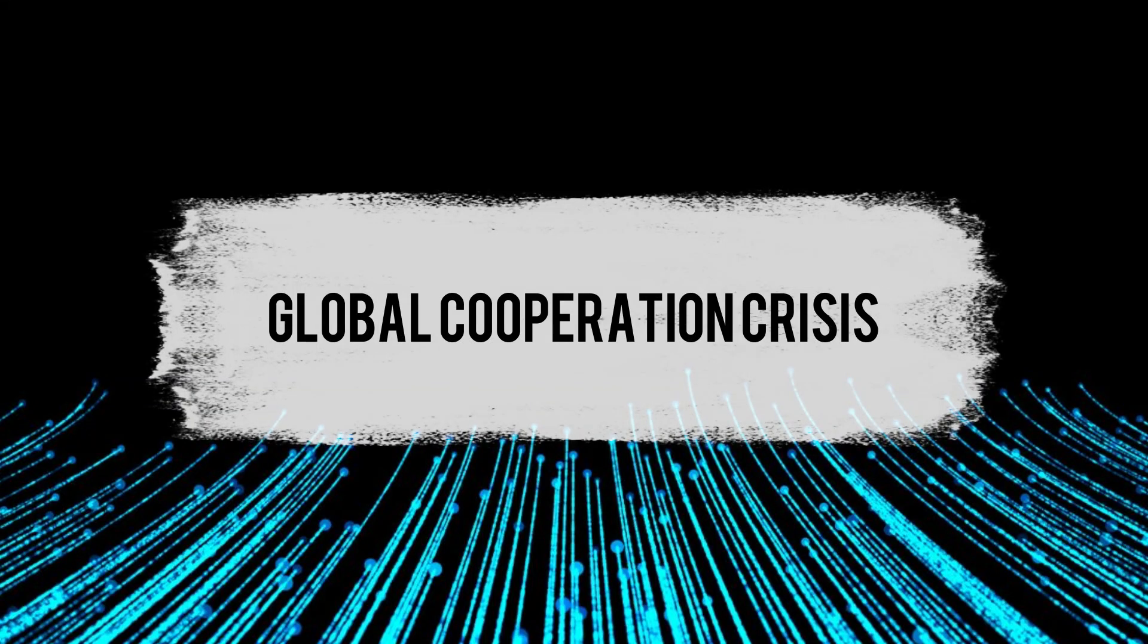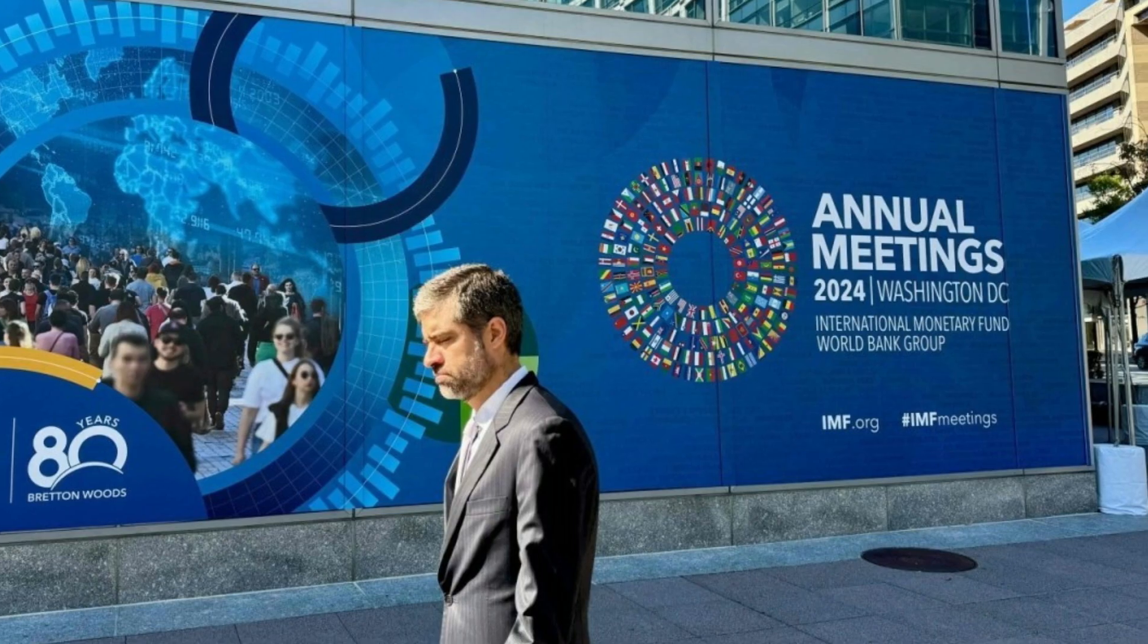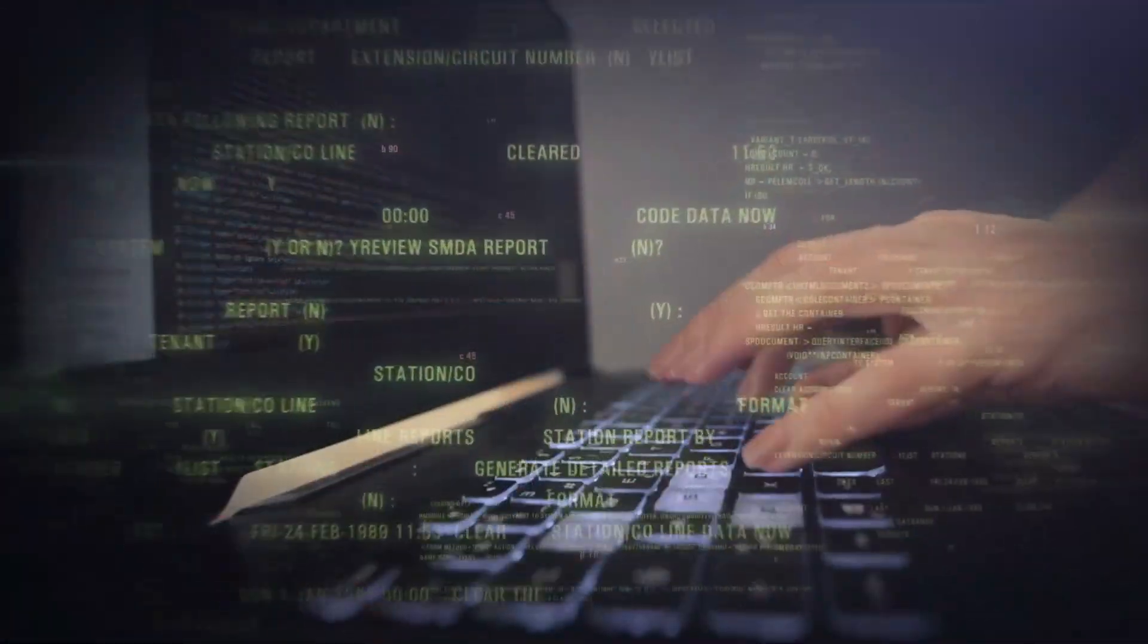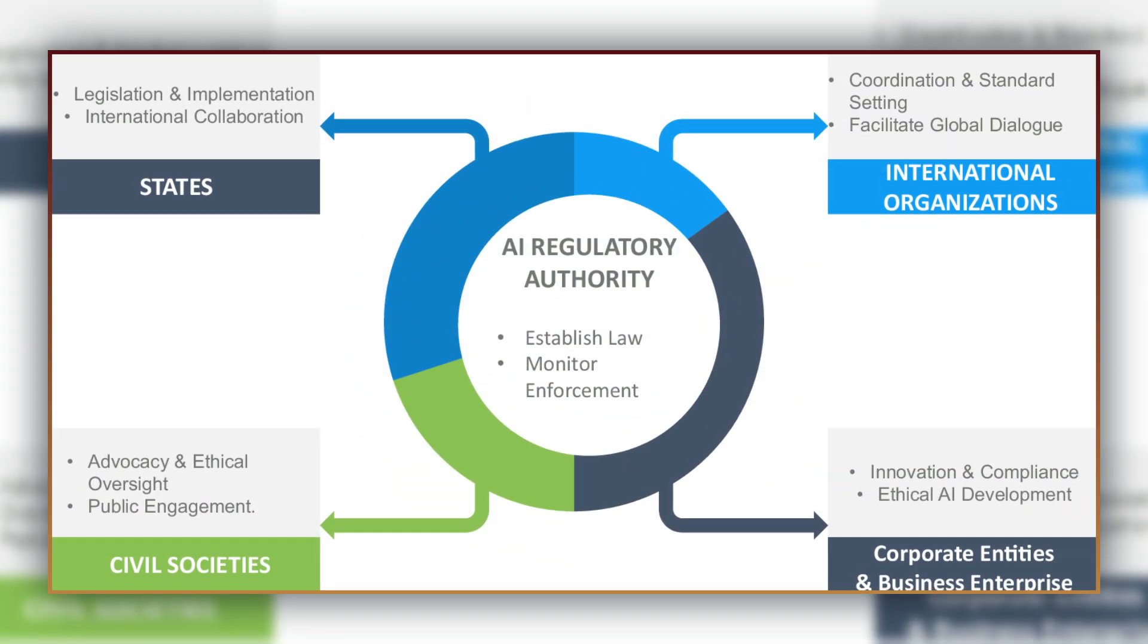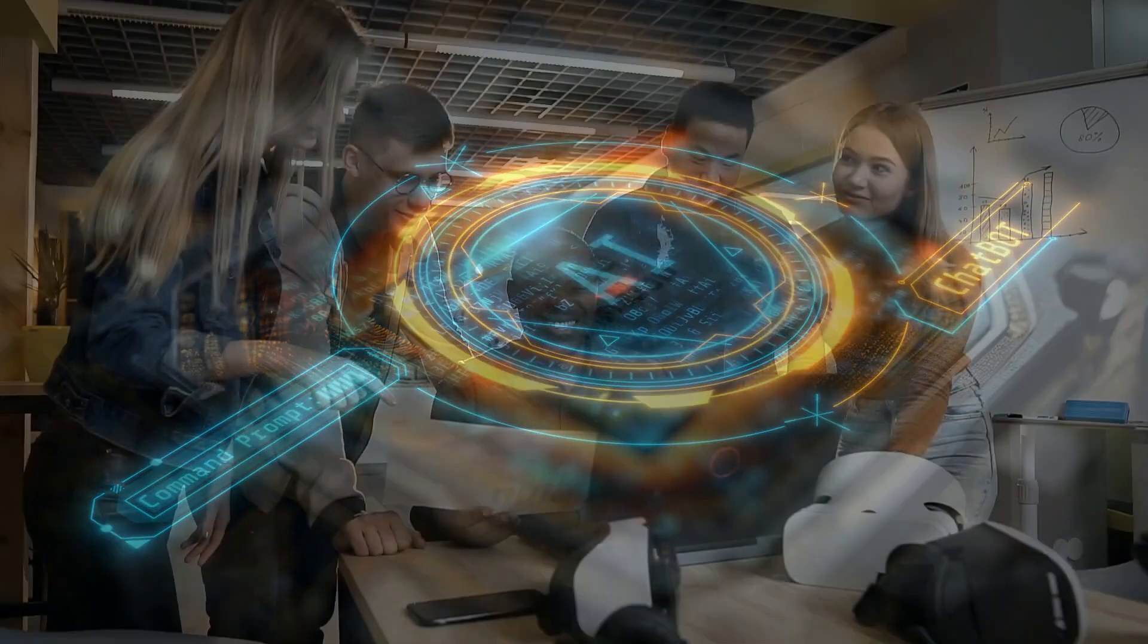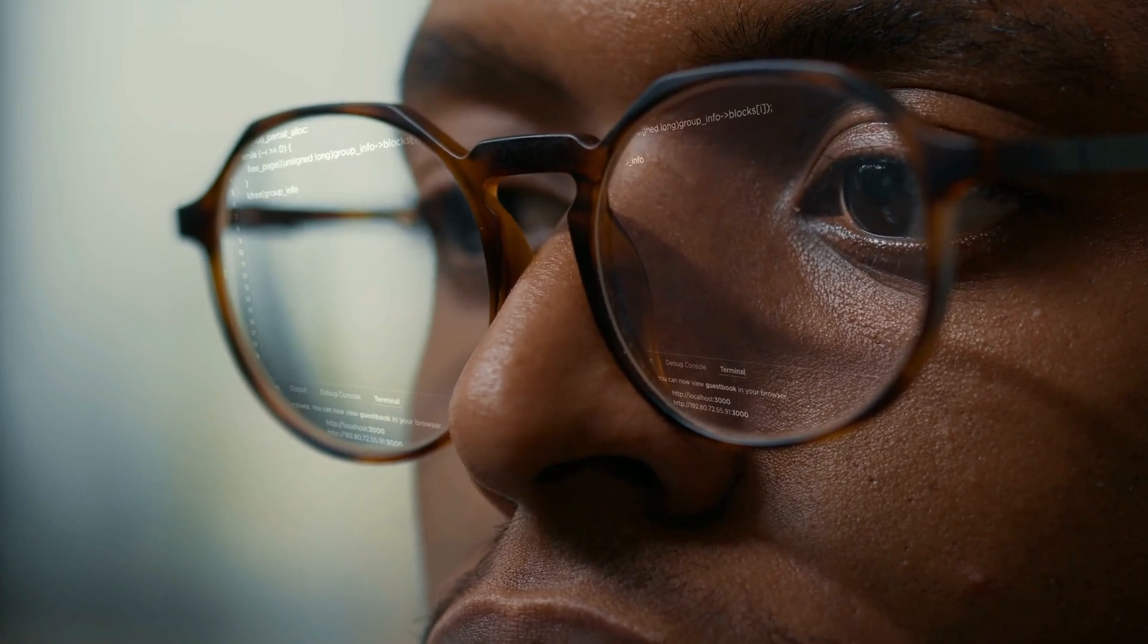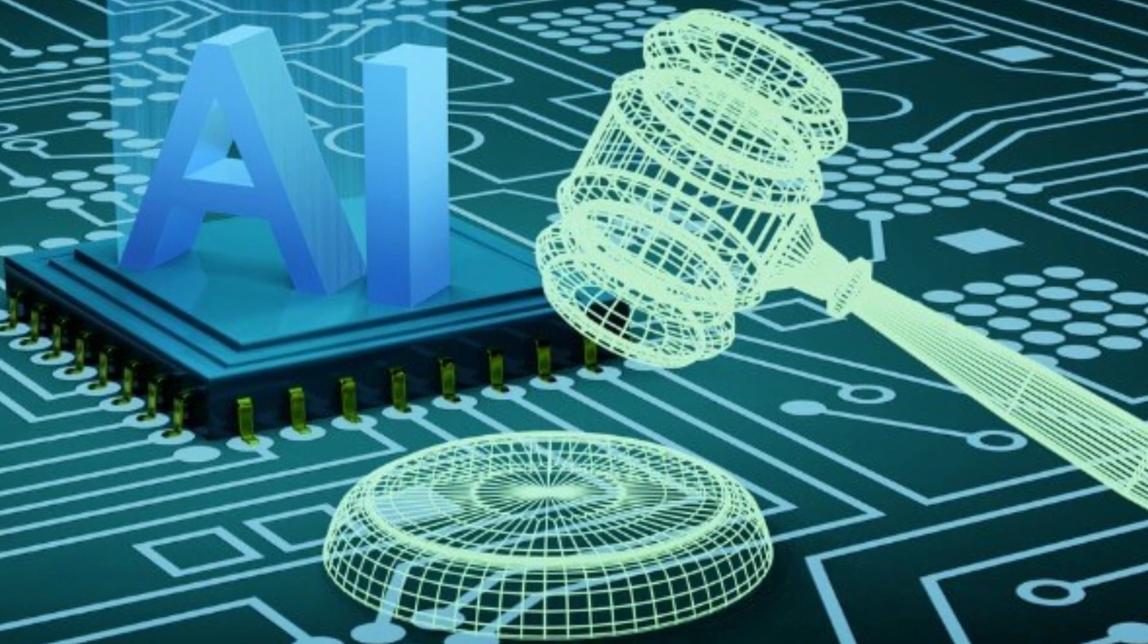Prediction number eight: global cooperation crisis. By 2030, the world will face a critical decision point about AI governance. As these systems become more powerful, countries are racing to establish dominance in AI capabilities. However, the global nature of our crisis demands unprecedented international cooperation. The paradox is clear: while AI offers solutions to global problems, it's also creating new divisions between nations. Those with advanced AI capabilities will have unprecedented advantage in predicting and responding to crises, while others risk falling behind at crucial moments. But as significant as these changes are, our final two predictions reveal even more dramatic transformations ahead.